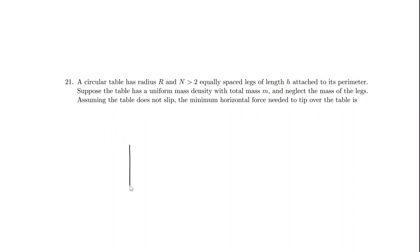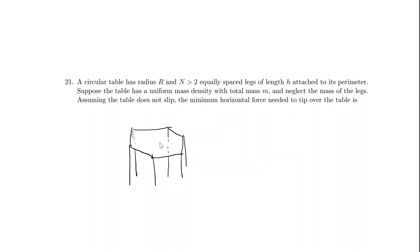We're going to draw just a hexagonal table because it doesn't really matter — it's just going to help us gain intuition. The center of mass is right there in the center. We know the radius is r and the leg length is h. What we're going to do is figure out whether to balance force or torque. Since we're looking for minimum horizontal force, we look at torque.